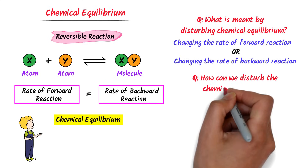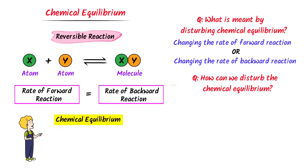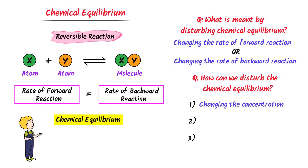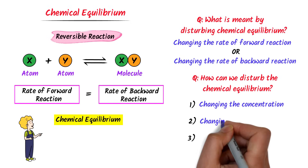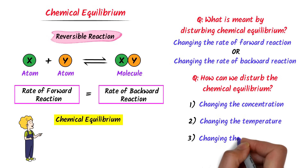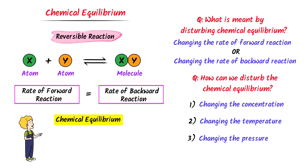Now the second question is, how can we disturb the chemical equilibrium? Basically, there are three methods through which we can disturb any chemical equilibrium. Firstly, change the concentration of reactants and products. Secondly, changing the temperature of a system. And thirdly, changing the pressure of a system. Thus remember that we can disturb the chemical equilibrium by three different ways.